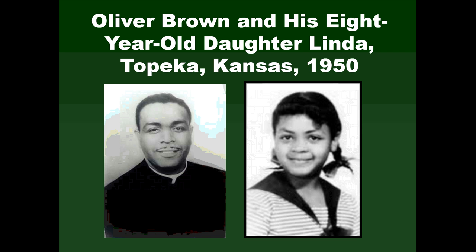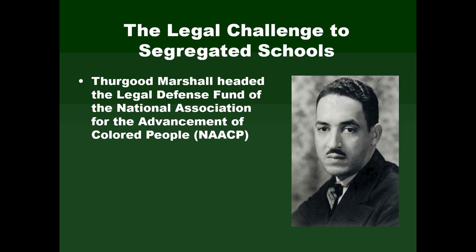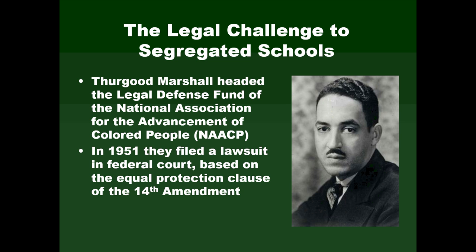They sued the Board of Education of Topeka, Kansas — and this is where the name comes from: Brown versus Board of Education. The lead attorney for the plaintiffs — those who wanted to challenge segregated schools — was Thurgood Marshall. He was the head of the Legal Defense Fund of the National Association for the Advancement of Colored People, the NAACP. In 1951, Marshall and his associates filed a lawsuit on behalf of parents that included Oliver Brown and many others in several different states, in federal court based on the Equal Protection Clause of the 14th Amendment.